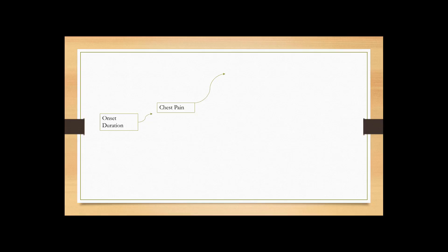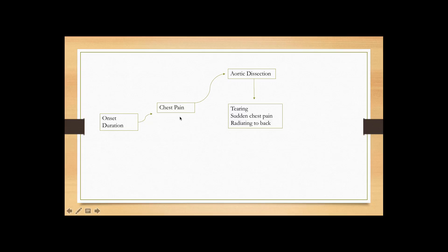The next condition is aortic dissection, presenting with both shortness of breath and chest pain. This is a hyper-acute situation — patients usually come in within two to three hours of onset. The chest pain is tearing in quality, very severe, very sudden, and radiating to the back — that's when you suspect aortic dissection.